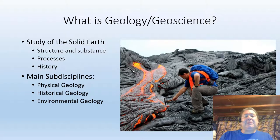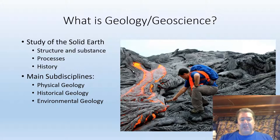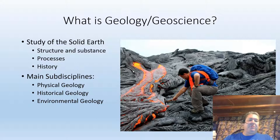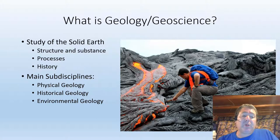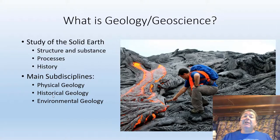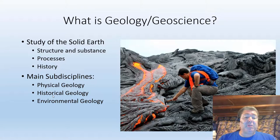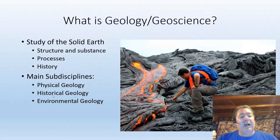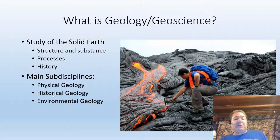There are three main sub-disciplines with lots of sub-sub-disciplines under each. The first is physical geology, and that's what this class is all about. Physical geology investigates the physical structure of the Earth and the processes involved. Historical geology investigates the history of our planet — how it has evolved and changed through time, the history of life, and the history of the discipline itself. A third discipline that has become huge in the last 40 years or so since the 1970s is environmental geology, which focuses on the interactions between humans and our geological environment.